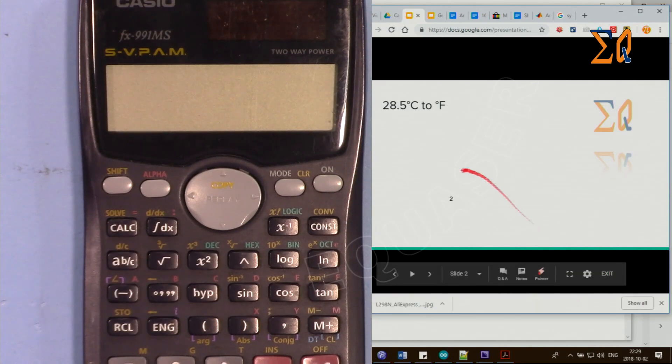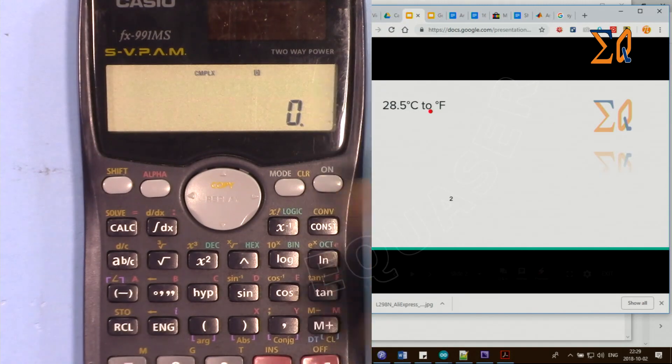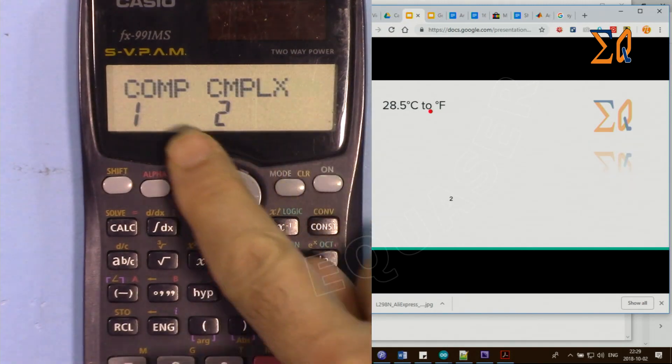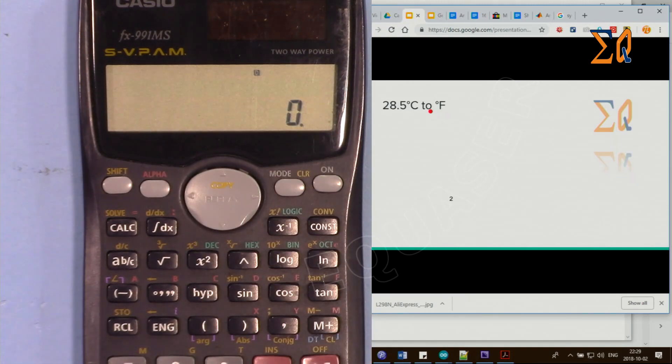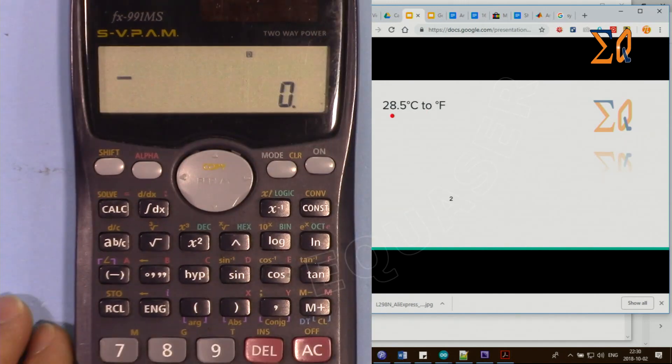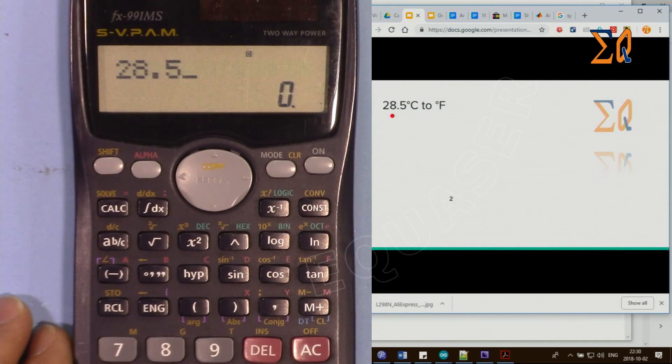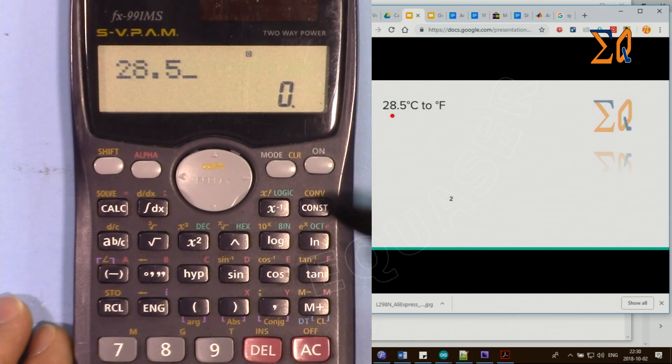Let's say you want to convert 28.5 degrees Celsius to Fahrenheit. I'm turning on the calculator, mode 1, so we are in this mode. We punch in 28.5, and then this is the convert.